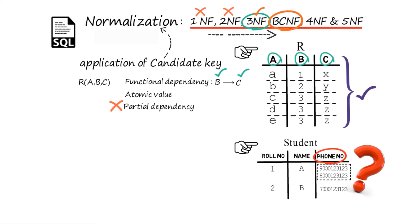If partial dependency exists for a particular table, that table is not in second normal form. We have to make it into second normal form by removing partial dependency. Today we will learn two points: what is partial dependency and how to remove it. If we understand these two concepts, we can easily understand what second normal form is. Now let's talk about partial dependency and how to identify it.